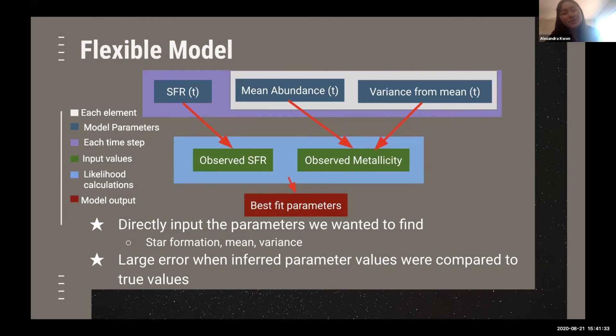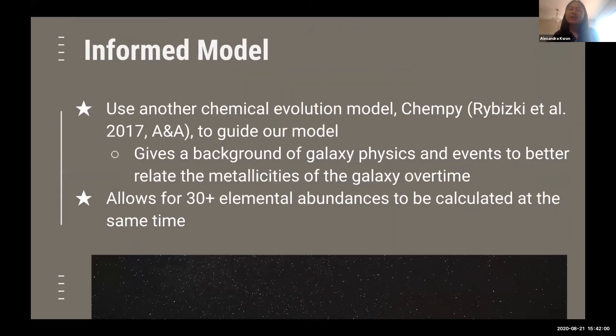The only problem with this model is it was too flexible and it produced up to 500% error, which is far too large for what we wanted to do. We knew that we needed a way to inform the model more about the actual galaxy physics. We had none of these parameters correlated; they were all allowed to explore their own space. We decided we needed a way to coordinate the parameters more to align more with the true values. That brought us to making the informed model.